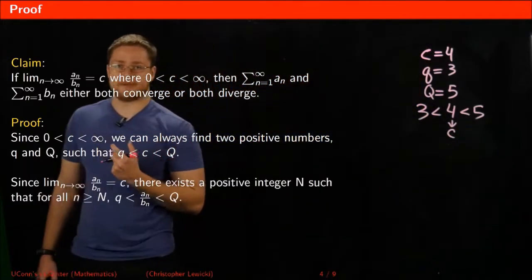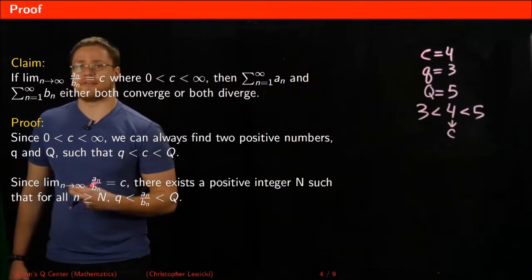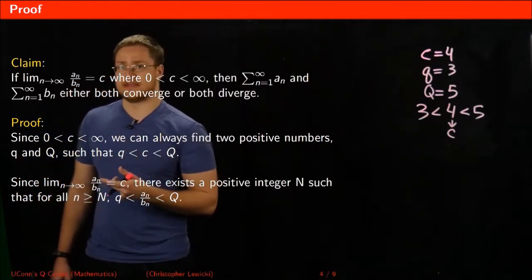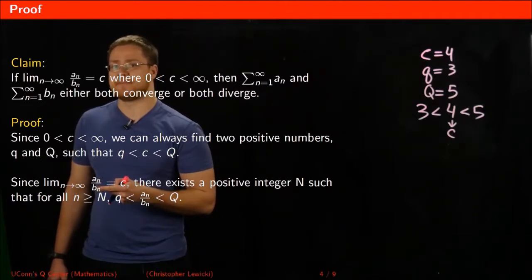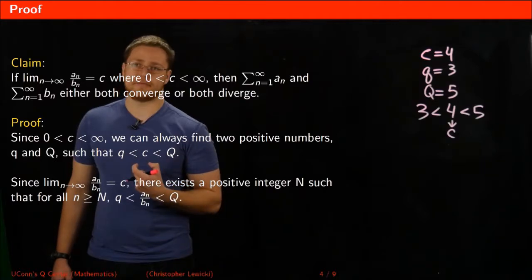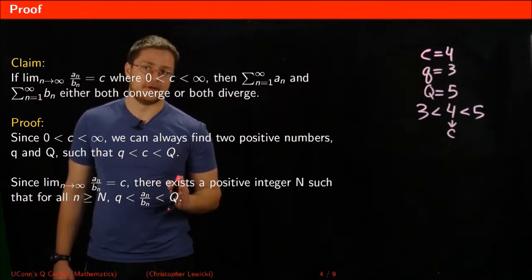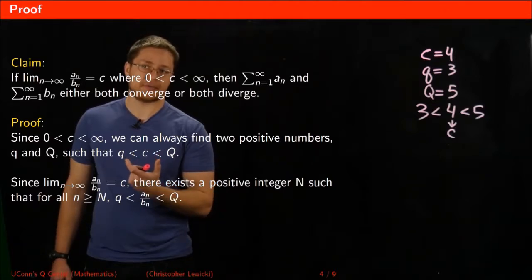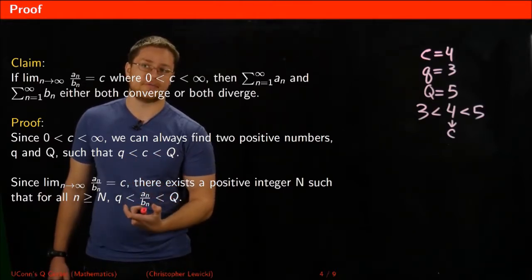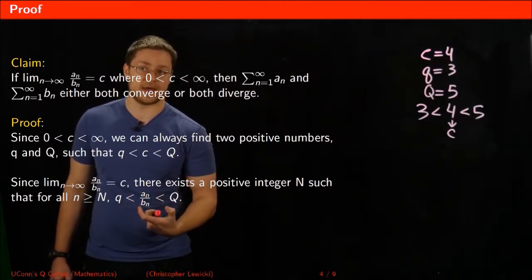This is important because if you consider this limit, what it means is that as n goes to infinity, the fraction aₙ divided by bₙ approaches c. Because of that, we can say that after a certain term — just like how c gets sandwiched between lowercase q and capital Q — the fraction aₙ divided by bₙ also has to get sandwiched between lowercase q and capital Q.